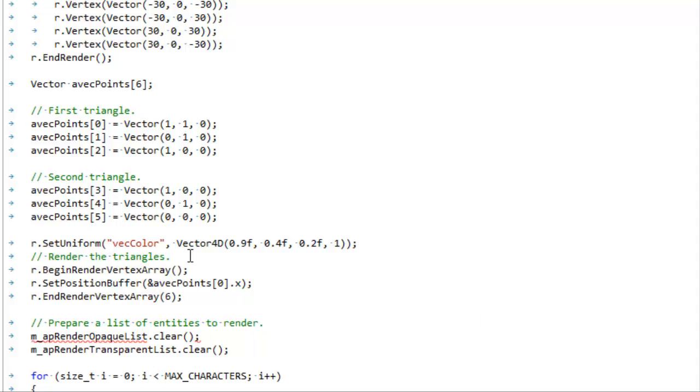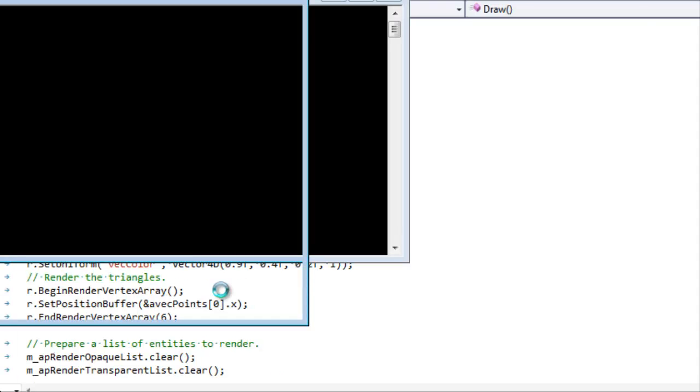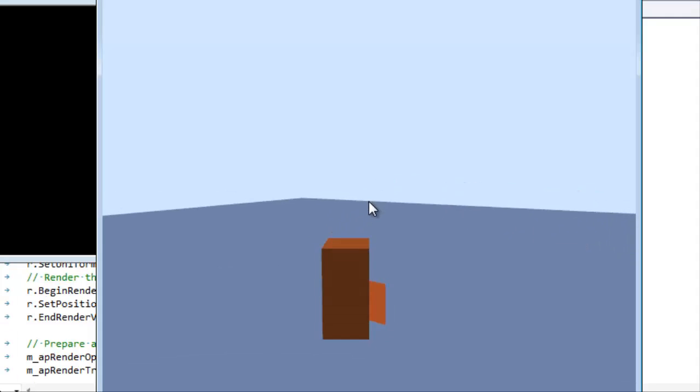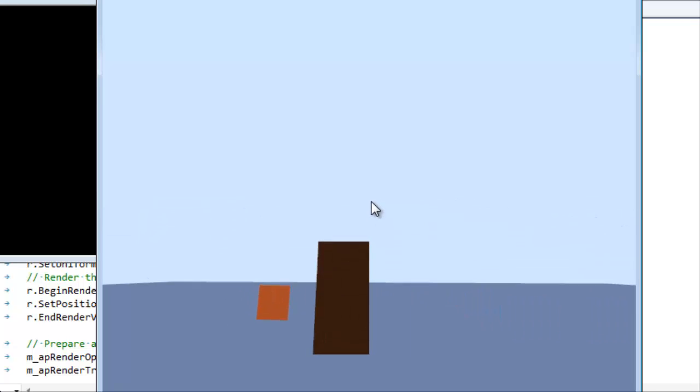How many vertices do we have? Six - two times three. We tell the graphics library we're gonna render a vertex array. We set the position buffer - this is our position buffer, it's a vertex buffer with a bunch of positions of triangles in it - and then we tell it we have six vertices or in other words two triangles, three vertices each.